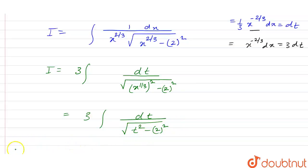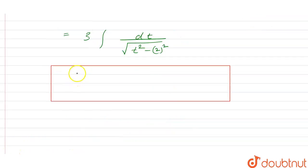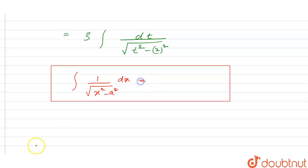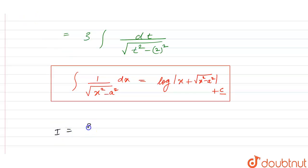This term is similar to the standard form: the integral of 1 upon under root of x squared minus a squared with respect to dx equals log of modulus of x plus under root of x squared minus a squared, plus C. Applying this, we have I equal to 3 times the integral of dt upon under root of t squared minus 2 squared.